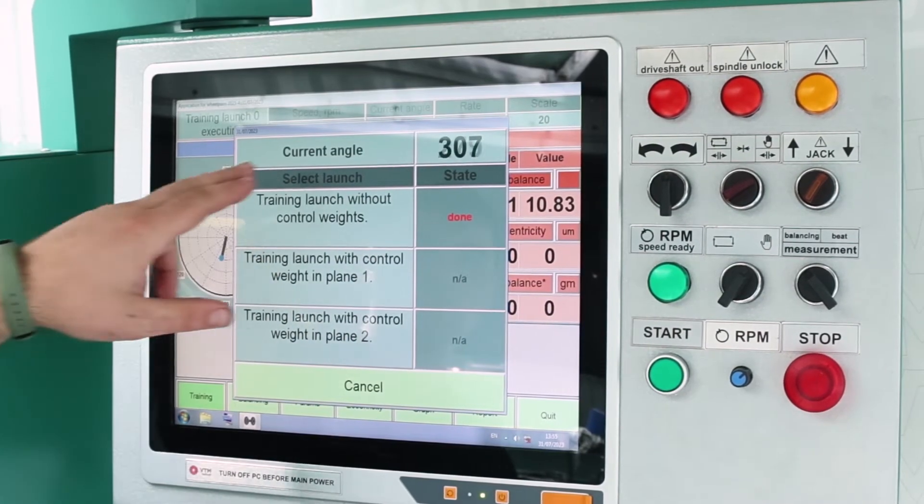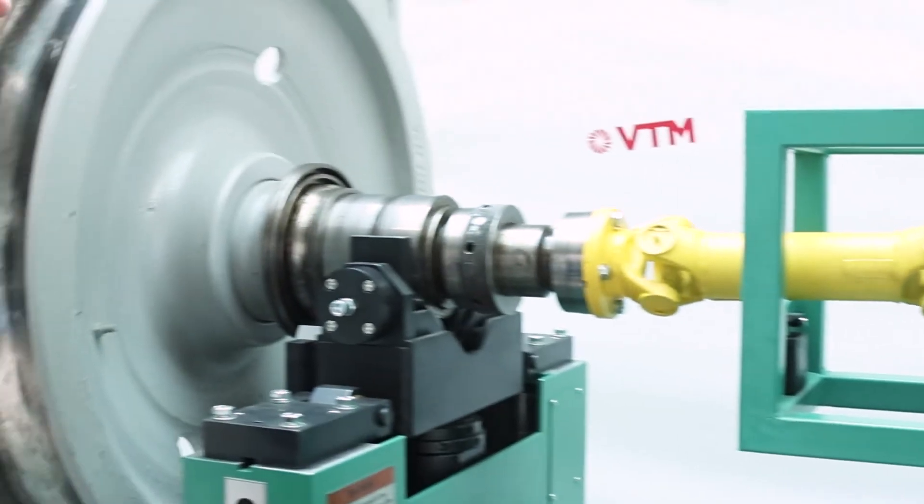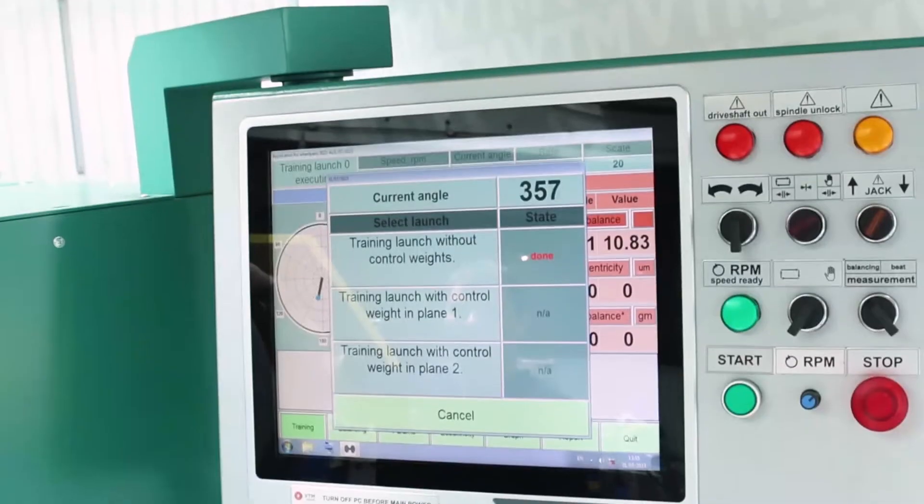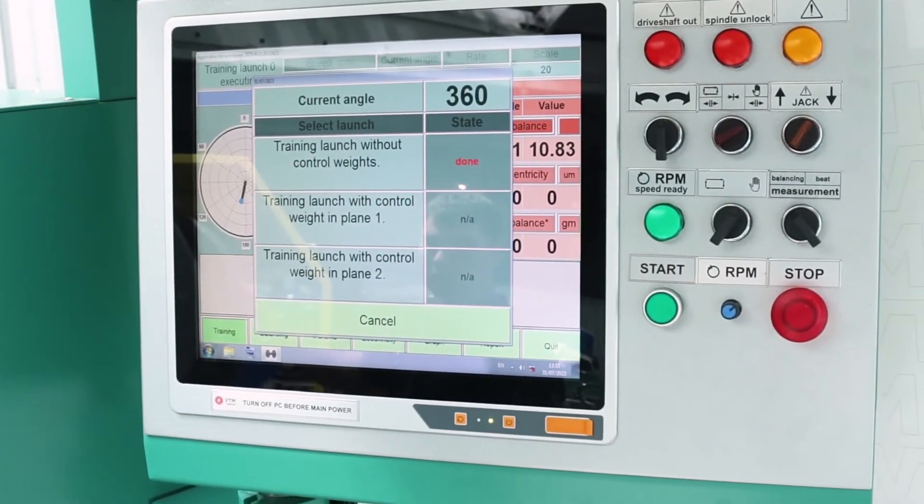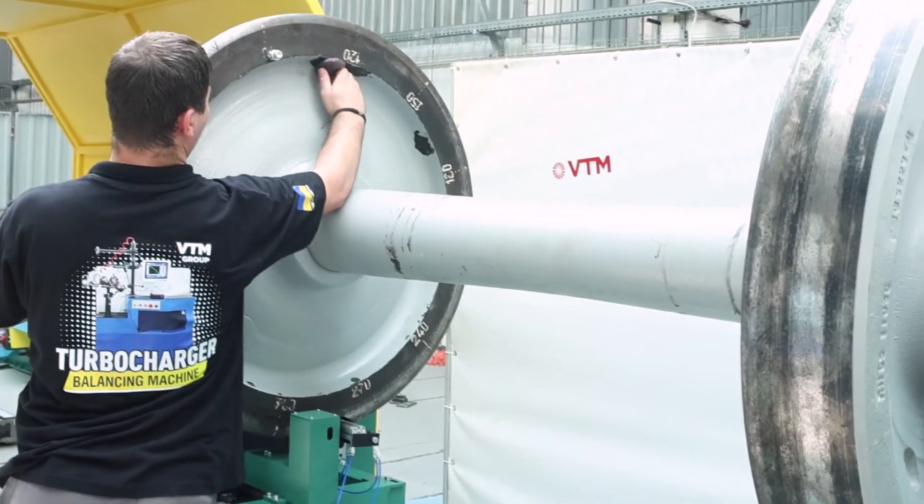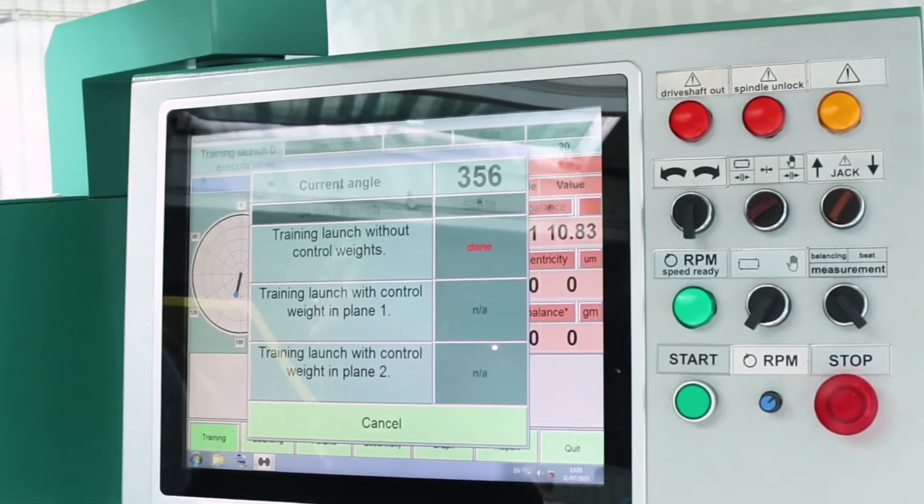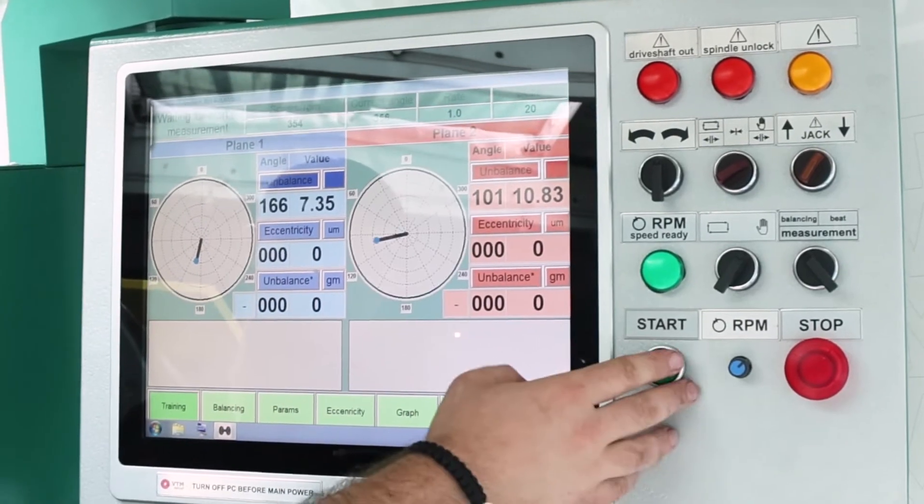Next, we manually set the current angle to zero degrees. And we install the trial weight on the first plane vertically from above. Select the launch with the weight on the first plane, press the start of rotation.